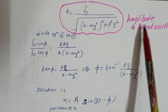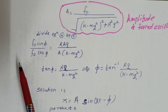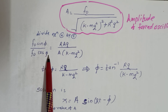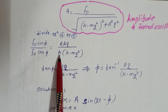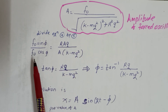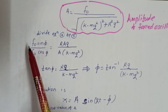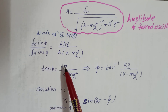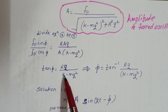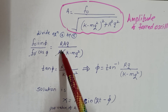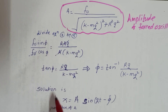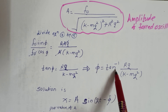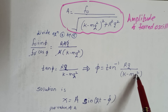Dividing equation 5 by equation 4, we get: F₀·sin φ / (F₀·cos φ) = R·A·Q / [A·(K − MQ²)]. Cancelling A and F₀, we get tan φ = R·Q / (K − MQ²). Therefore, φ = tan⁻¹[R·Q / (K − MQ²)].